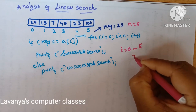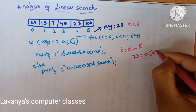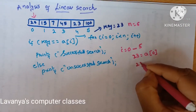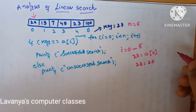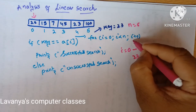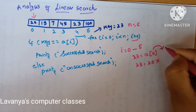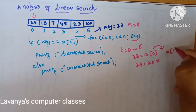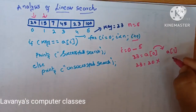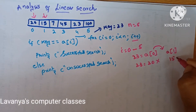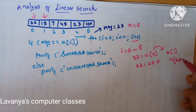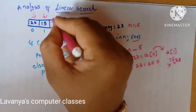So first, key element 23: is 23 equal to a[0]? What is a[0]? a[0] is 20. So 23 equals 20 — is it true? It is false. So then we go for i plus plus. i value is 0, now it is incremented to 1. a[1] — what is a[1]? It is 50. What is your key element? Key element is 23. Is 50 equal to 23? No, this is also wrong.